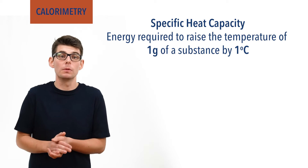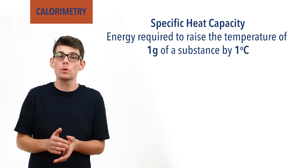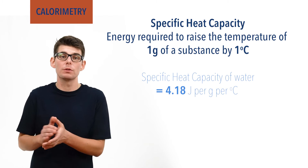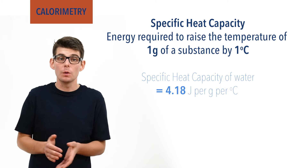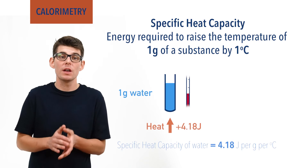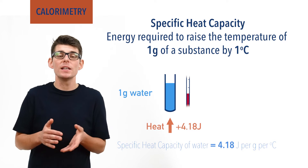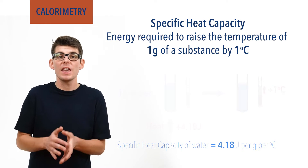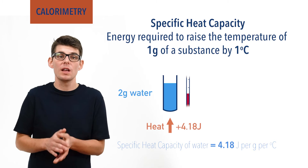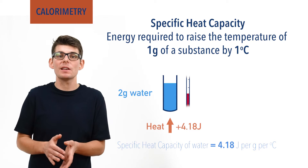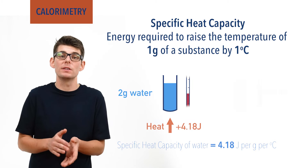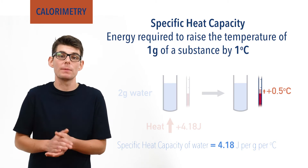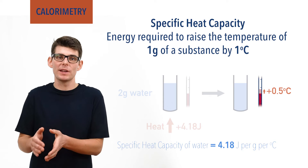For example, the specific heat capacity of water is 4.18 joules per gram per degree Celsius. So if we gave one gram of water 4.18 joules worth of extra energy, its temperature would rise by one degree Celsius. If we gave two grams of water the same amount of energy, its temperature would now only rise by 0.5 degrees Celsius, as you are trying to heat double the amount of water with the same amount of energy.